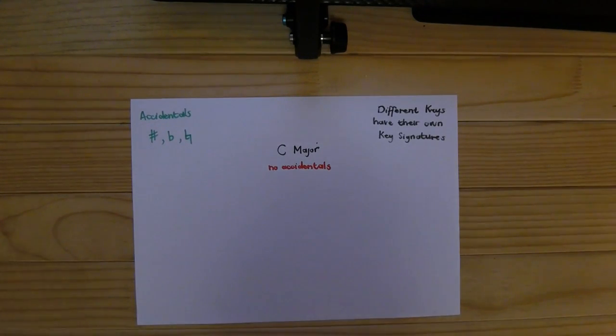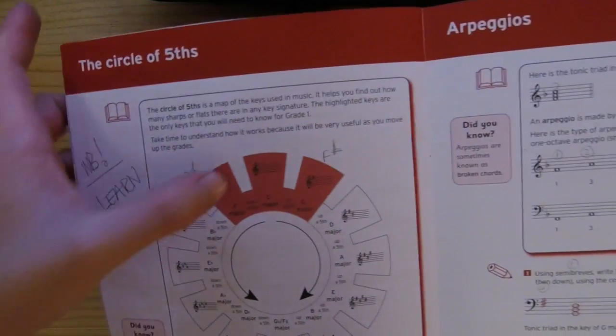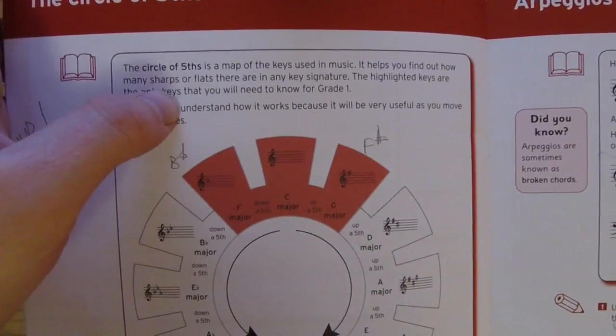If you have a look closely here at the Trinity College Grade 1 workbook, you'll see that right there we have C major, but there is absolutely no accidental.